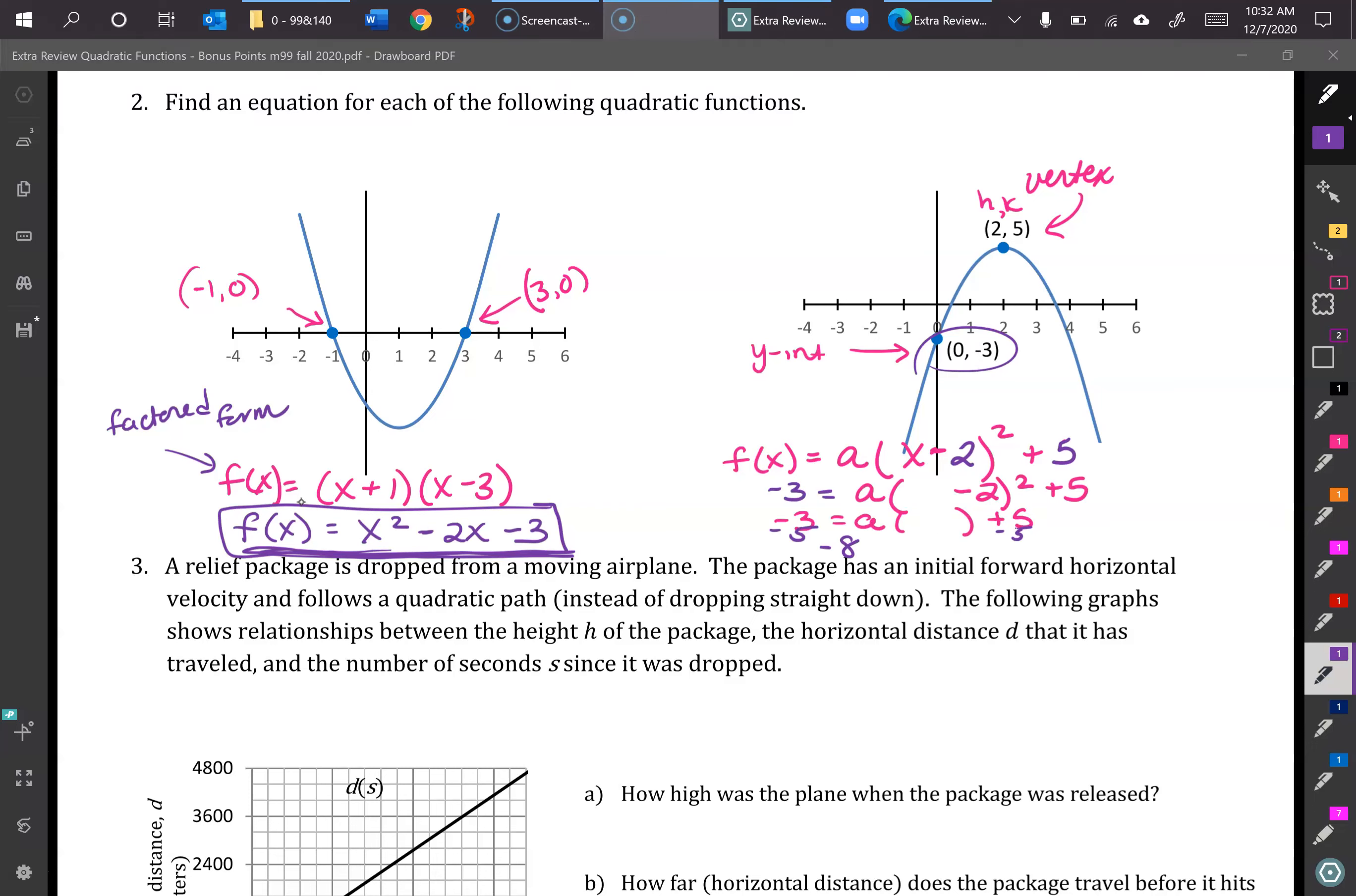We get the negative 3 in for y, the 0 in for x. And now we have negative 2 squared. That would be a 4a right in there. Subtract 5 from both sides, and we get negative 8 equals 4a. If we divide both sides by 4, we're going to get a equals negative 2.